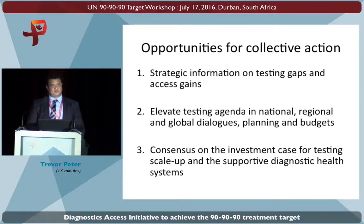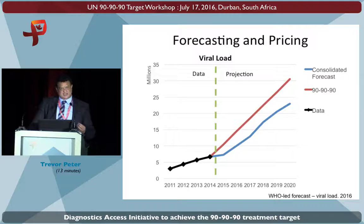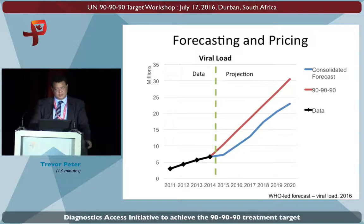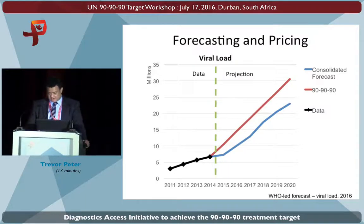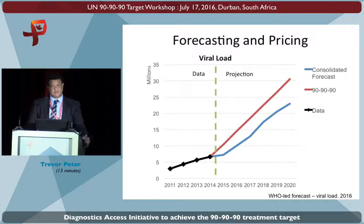Secondly, we need to elevate the testing agenda so that we are talking not just about what we need to achieve in testing, but also what specific steps we could take, drawing from best practice and innovation. We need these discussions not only at the global level — where we've been relatively successful in having more dialogue around diagnostics — but bringing that down to regional and national levels as well, and seeing how that promulgates into planning and budgets. From that, we need a very good consensus on the investment case, identifying best practice so that resources can be more effectively used.